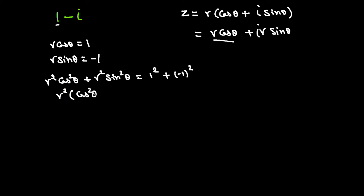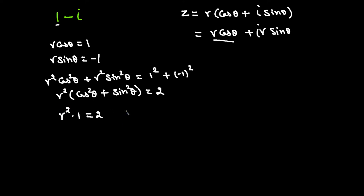From the trigonometric identity, sin²theta plus cos²theta equals 1, so R² times 1 equals 2. Taking the square root of both sides gives R equals square root of 2. That's the modulus of the complex number. Now before plugging in, we need to find the argument theta.